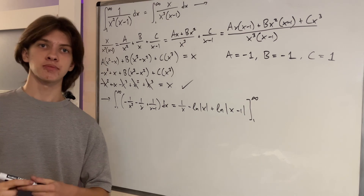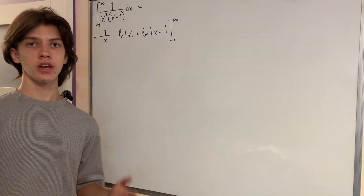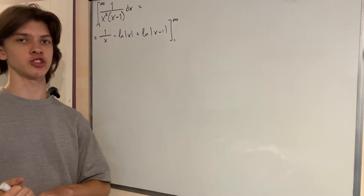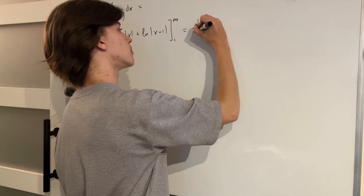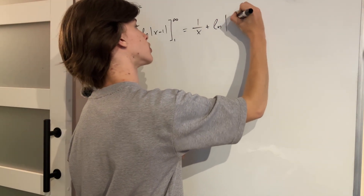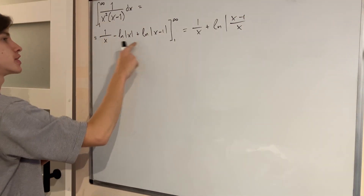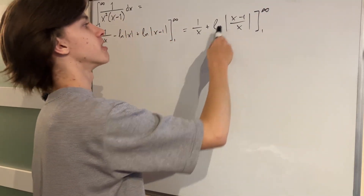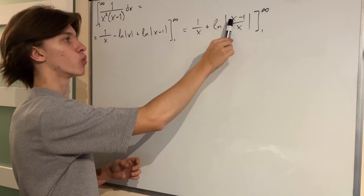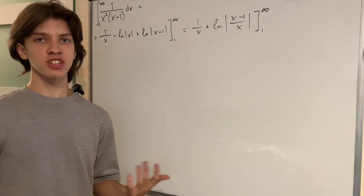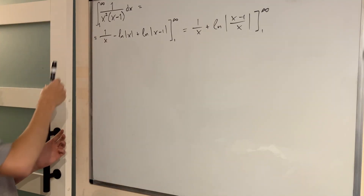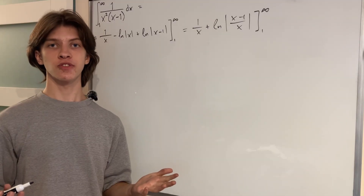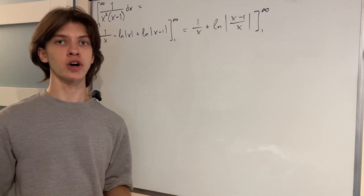Now that we've found the antiderivative, let's proceed to computing the bounds. First, I'll simplify the sum of logarithms into a product: we'll have 1 over x plus the logarithm of the absolute value of x minus 1 over x, evaluated with our bounds. But what's really concerning is that we obviously can't plug in infinity, and also we can't plug in 1, because that gives us the logarithm of zero which does not exist. This is what makes the integral an improper integral — it must be evaluated in terms of limits.